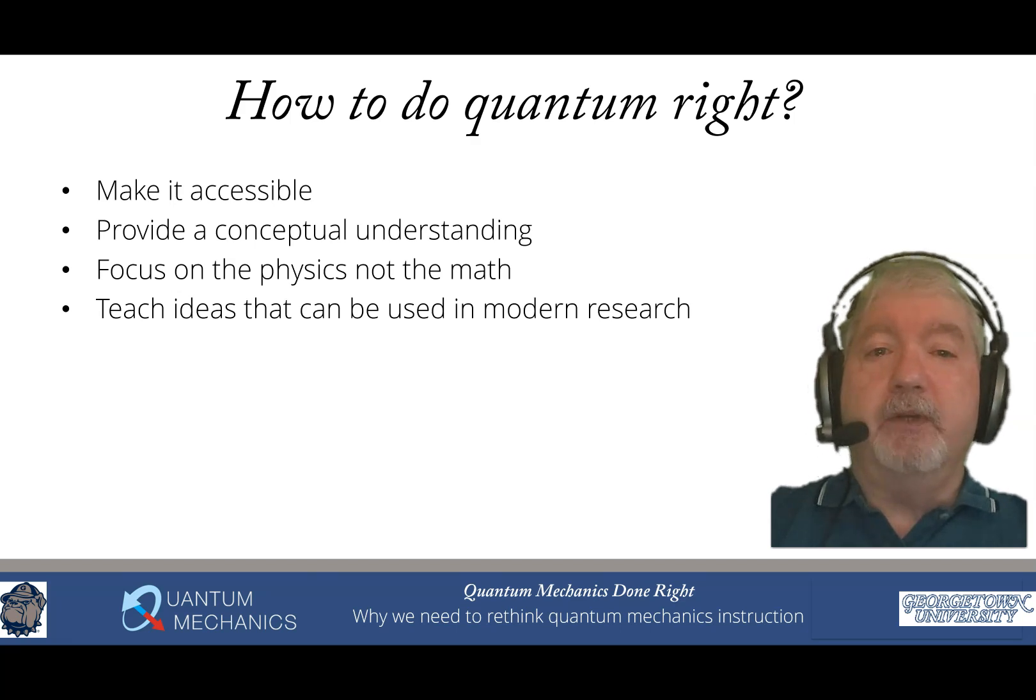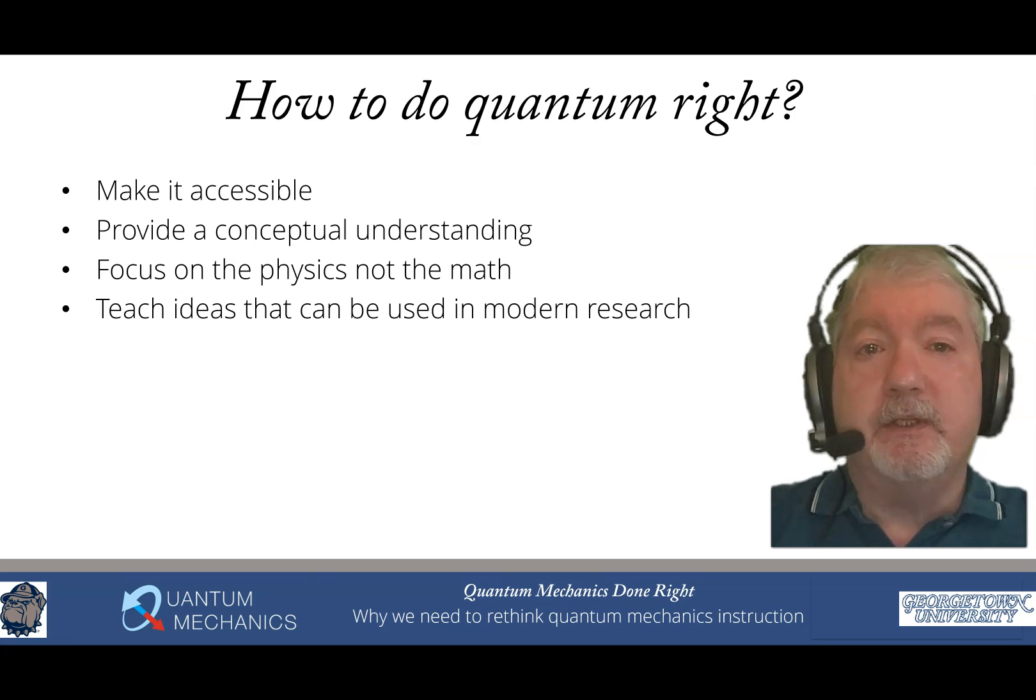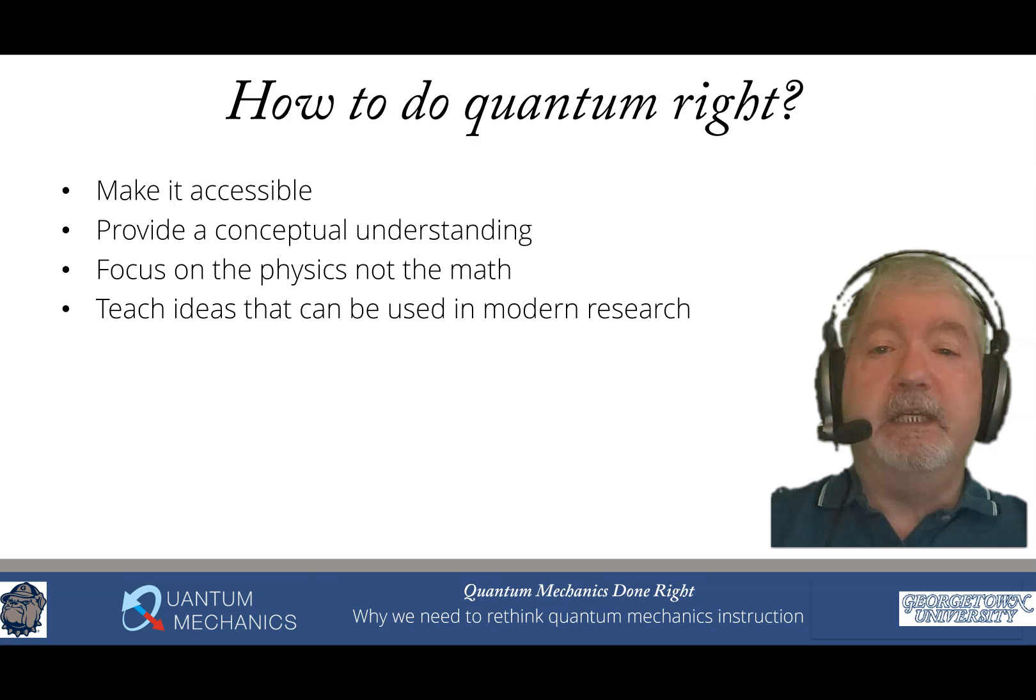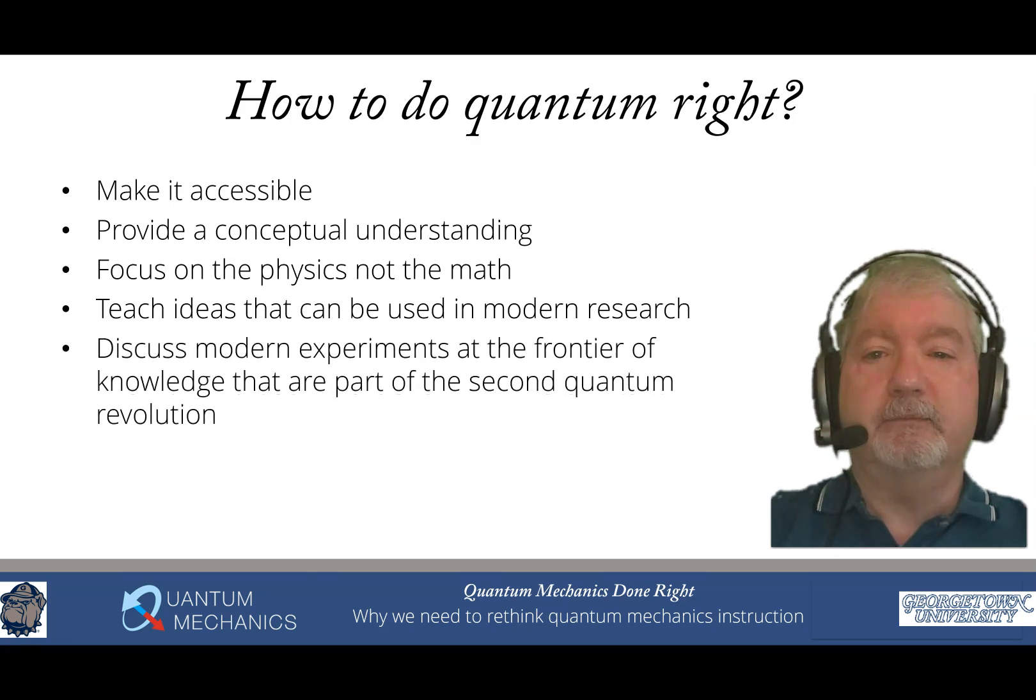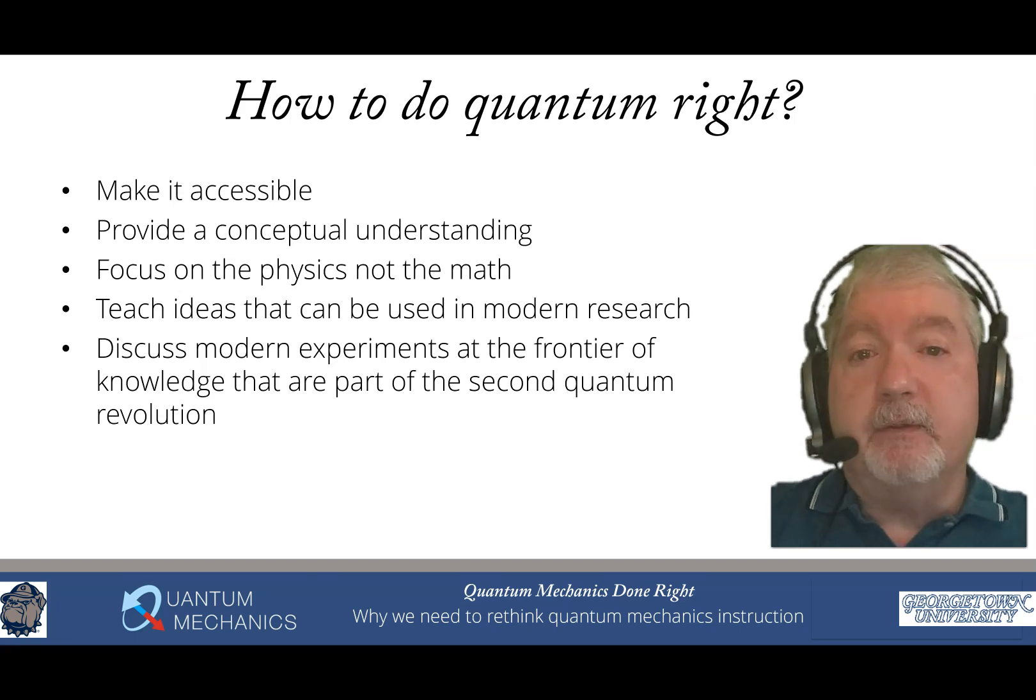Another thing that you learn if you go into research and do a PhD is most of the quantum mechanics that you learned in all of this instruction over the three years isn't actually what you'll use when you get involved in research. Most research involves working with operators and you learn how to do things like solve differential equations with series solutions, which never comes up in actual research anymore. So let's teach ideas that can actually be used in modern research. Let's discuss modern experiments. Many quantum classes will start with the experiments that led us to quantum and then they'll ignore the fact that we're now deep into the second quantum revolution and there are lots of exciting new experiments that are at the frontier of knowledge, but we don't cover them. Why is that?